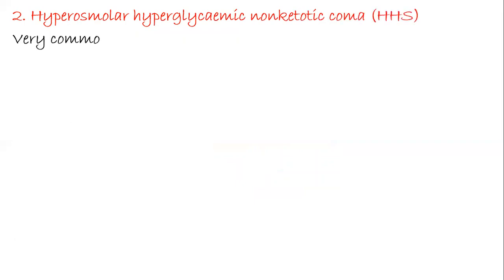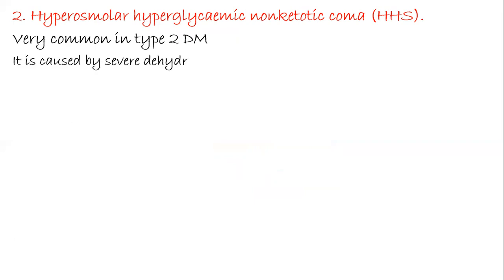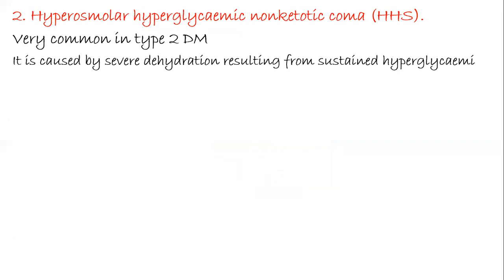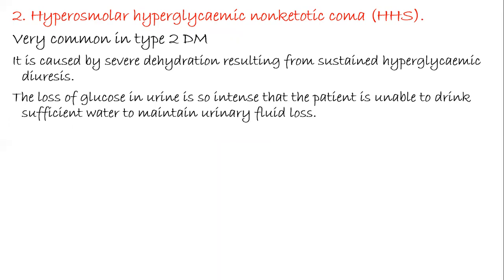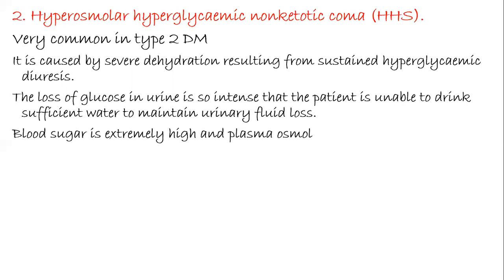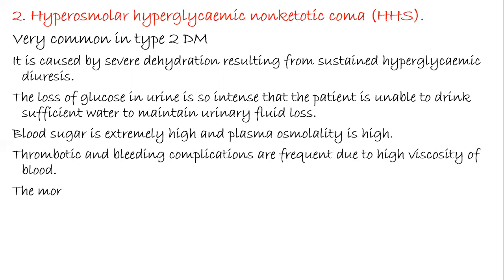The second acute complication is hyperosmolar hyperglycemic non-ketotic coma, common in type 2 diabetes and rare in type 1. It is caused by severe dehydration resulting from sustained hyperglycemic diuresis. The loss of glucose in the urine is so intense that the patient cannot drink sufficient water to maintain urinary fluid loss. Blood sugar is extremely high, plasma osmolality is high, and thrombotic and bleeding complications are frequent due to high blood viscosity, leading to increased mortality.